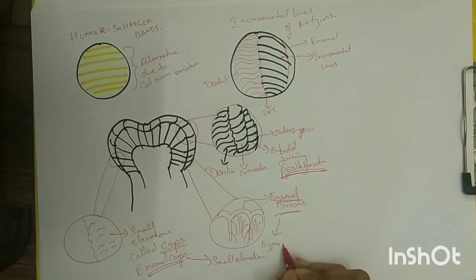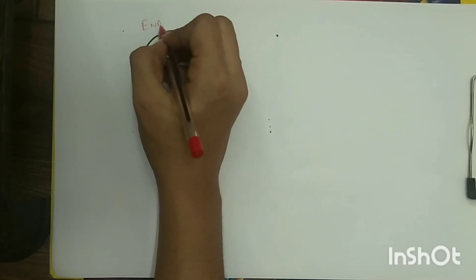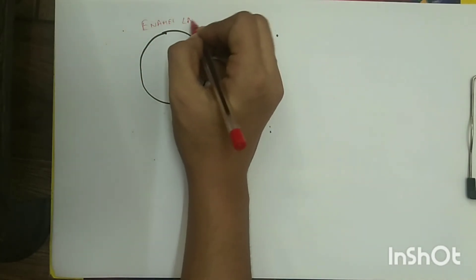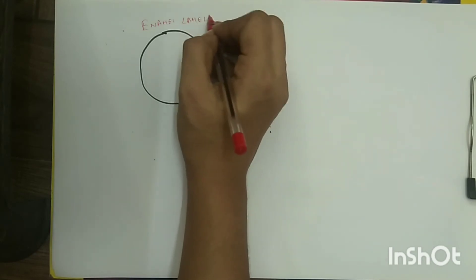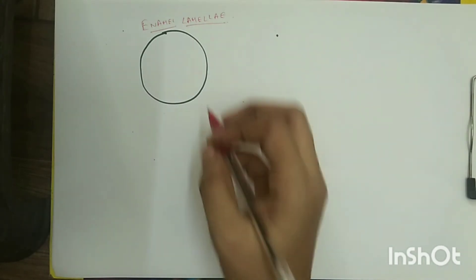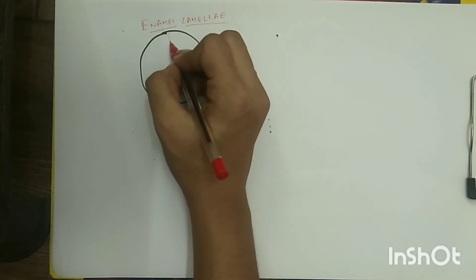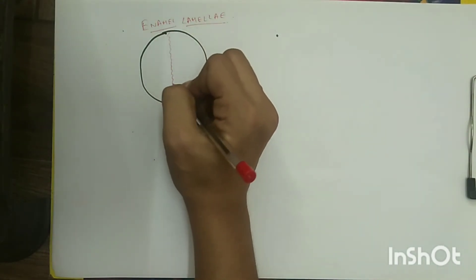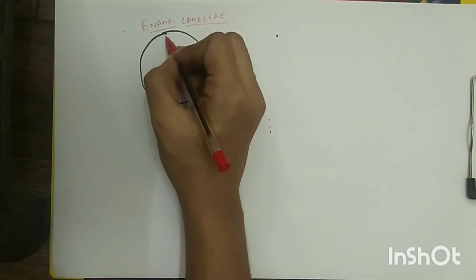Enamel lamellae and cracks: enamel lamellae are thin sheet-like structures arranged in longitudinal and radial direction of tooth, best demonstrated in horizontal sections. They extend from the surface of the enamel to the DEJ and some may even reach the dentin.